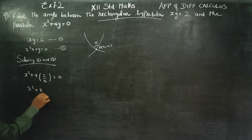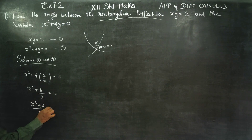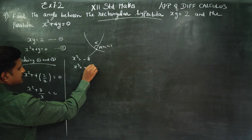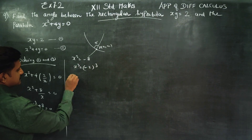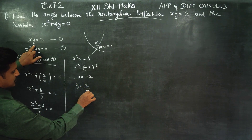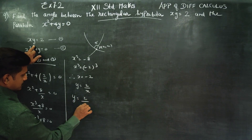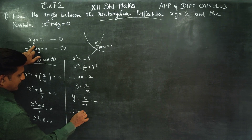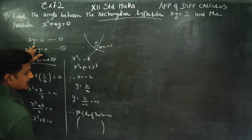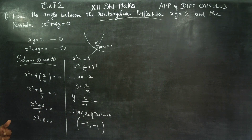So x squared plus 8 by x equals 0. Cross multiplying gives x cubed plus 8 equals 0, therefore x cubed equals minus 8, which is minus 2 whole cubed. Since the powers are the same, x equals minus 2. Substituting back, y equals 2 by minus 2, giving y equals minus 1. Therefore the point of intersection of the two curves is (minus 2, minus 1).